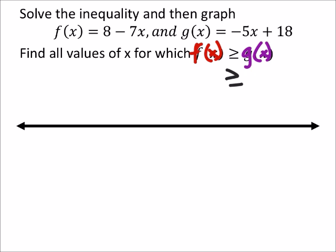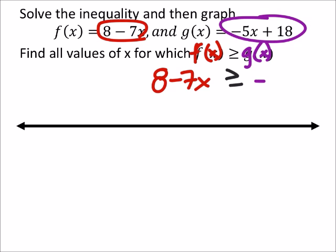So without changing the inequality here, I'm just going to replace f(x) with the expression that it is. So I'd have 8 minus 7x, and then I'm going to replace g(x) with this expression, because that's what it is, negative 5x plus 18.